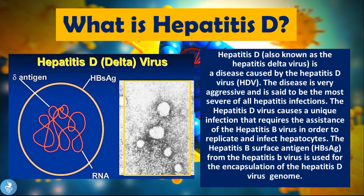Something very interesting about the hepatitis D virus is that in order for it to infect someone, it actually needs the assistance of the hepatitis B virus. That means a patient will not be able to get a hepatitis D infection if they are not infected with hepatitis B. Hepatitis D relies on hepatitis B in order to survive and replicate in the human host. The HBsAg — the surface antigen of HBV — forms an envelope around the HDV genome, which is required for its survival.